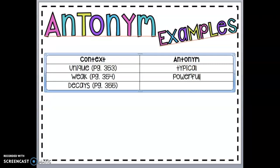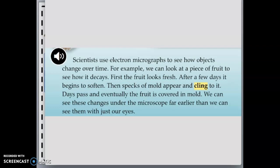And our last example for today is the word decays. Let's head to page 355, find the word decays, and see if we can find the antonym. Remember, antonym is the opposite. All right, let's read this passage and see if we can find out what the opposite of decay is. Scientists use electron micrographs to see how objects change over time. Did any of those words help me figure out what the opposite of decays is? You guys are right. It didn't. For example, we can look at a piece of fruit to see how it decays.